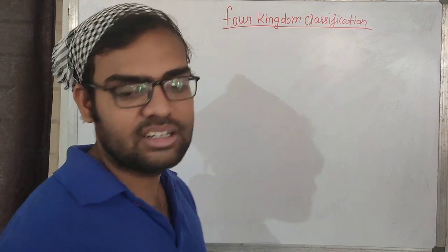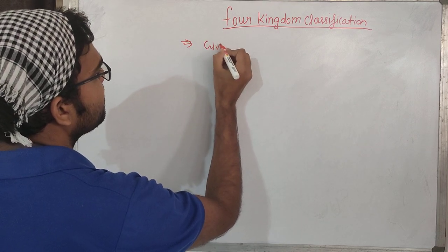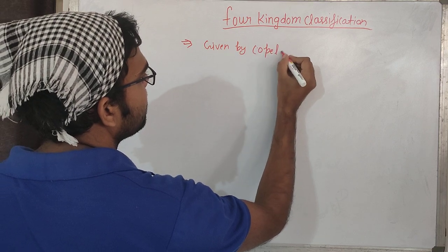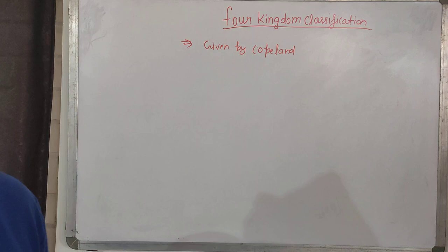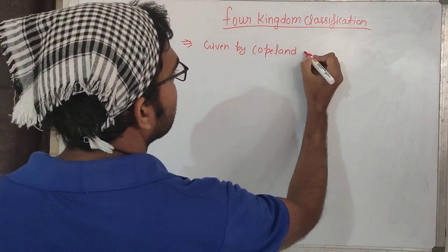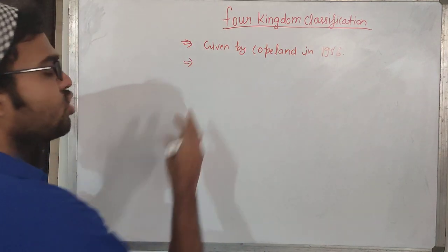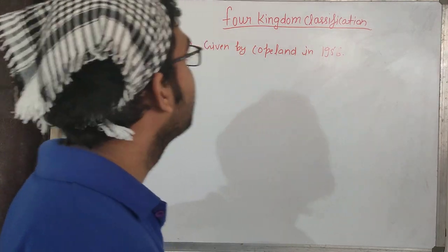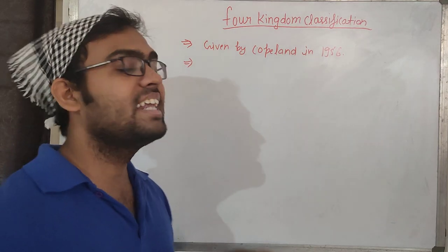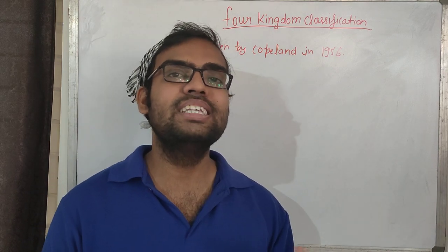Today we are going to talk about 4 Kingdom Classification. This 4 Kingdom Classification was given by Copeland in 1956. The question comes: why did he give the 4 Kingdom Classification? Because in the 3 Kingdom Classification, there was no separate group for prokaryotes and eukaryotes — they were kept in the same group, Protista.